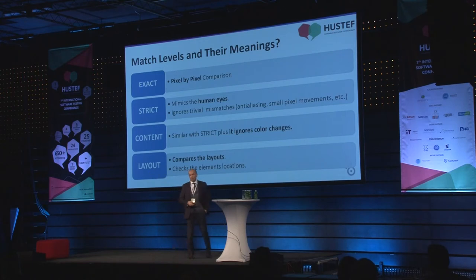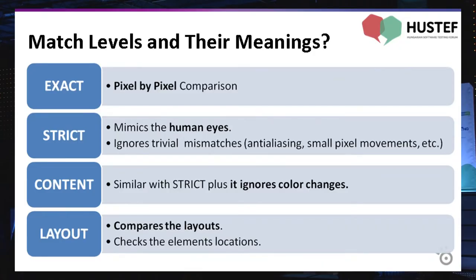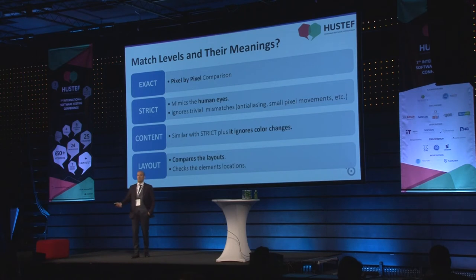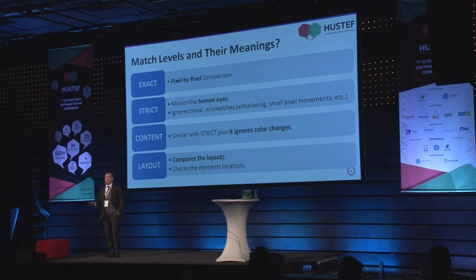Now I'll go over the match levels. 'Exact' means pixel-by-pixel comparison — we generally don't use it much because it's so error-prone. We generally prefer 'Strict' match level, which mimics the human eye and ignores challenges like anti-aliasing and small pixel movements. 'Content' is very similar to Strict but also ignores color changes. If you want to test the layout of your elements — the location of elements on your website — you should use the 'Layout' match level.